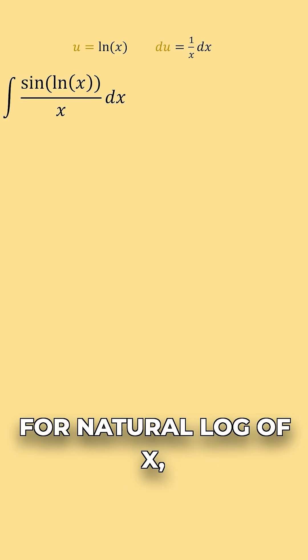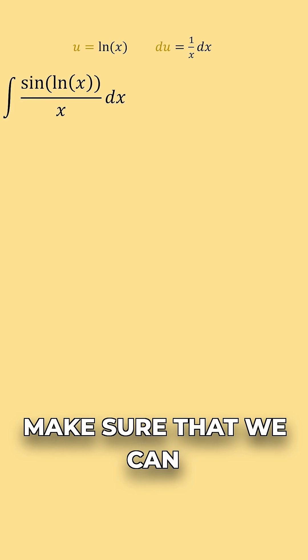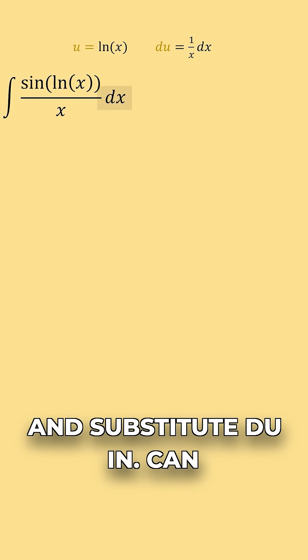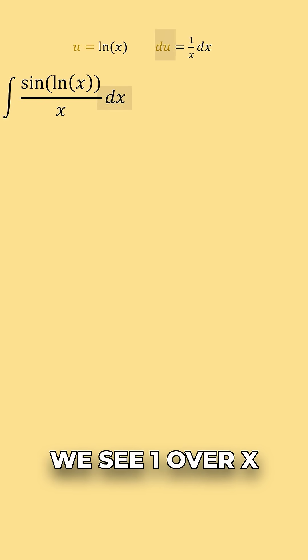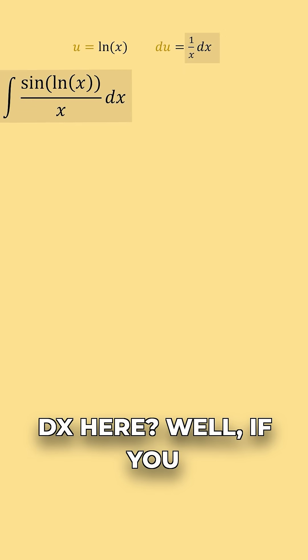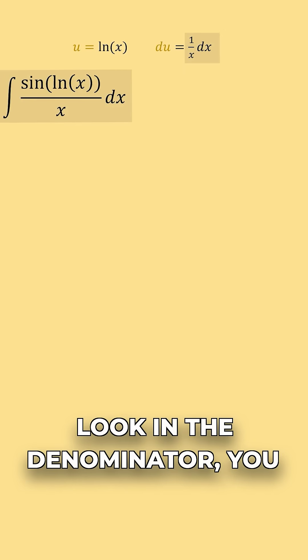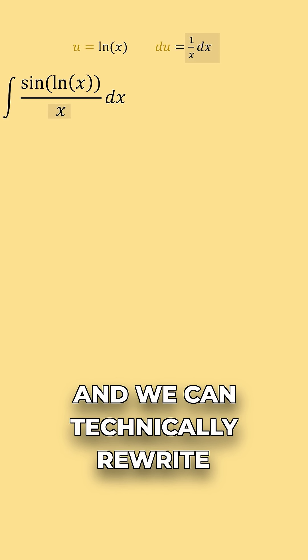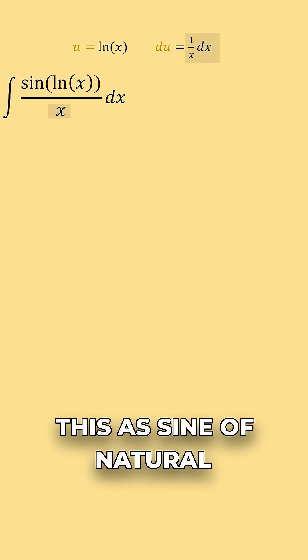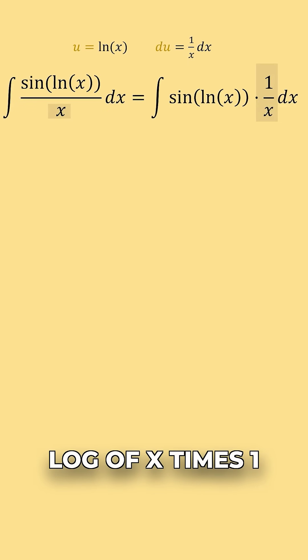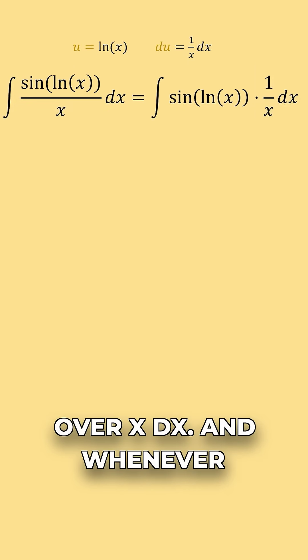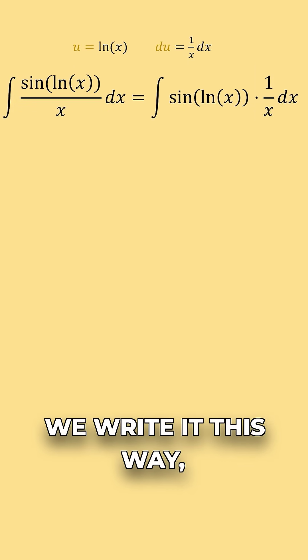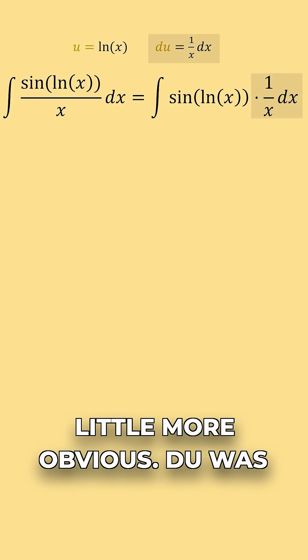We know we can substitute u in for natural log of x, but we want to also make sure that we can get rid of this dx and substitute du in. Can we see 1 over x dx here? If you look in the denominator, you see we have an x. And we can technically rewrite this as sine of natural log of x times 1 over x dx. When we write it this way, it becomes a little more obvious.